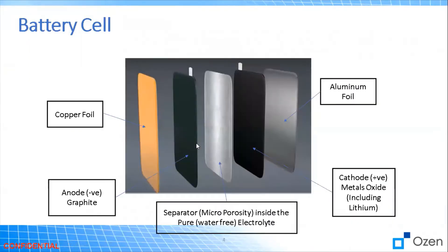The battery cell basically consists of a copper foil and an aluminum foil on both sides for containing it, along with the electrode. It has a negative anode made from graphite, and a positive cathode made from lithium-coupled oxides. In the middle we have a liquid called the electrolyte, and it includes a separator, which is a porous medium to allow electrons to move in between.